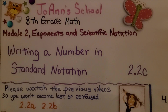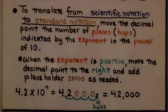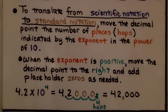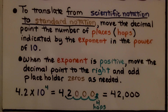Lesson 2.2c: Writing a Number in Standard Notation. To translate from scientific notation to standard notation, move the decimal point the number of places — hops — indicated by the exponent in the power of 10. When the exponent is positive, move the decimal point to the right and add placeholder zeros as needed.